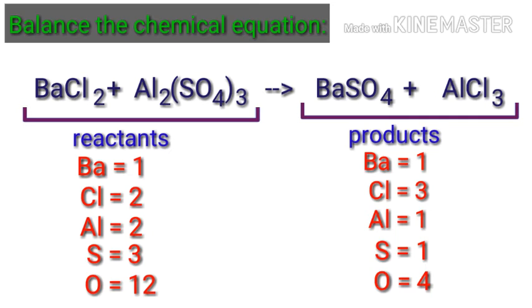In this equation, we need to balance the aluminum atoms first. To do this, we need to put a coefficient of 2 in front of AlCl₃. The aluminum atoms are balanced.